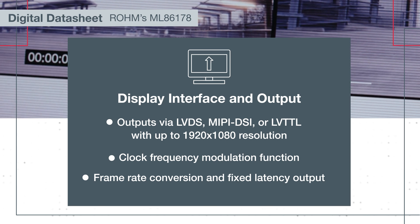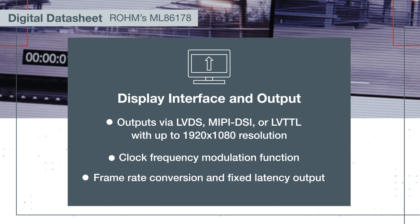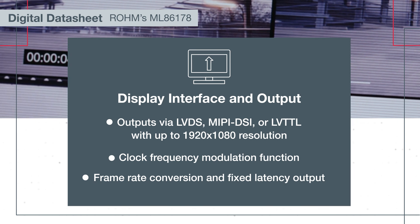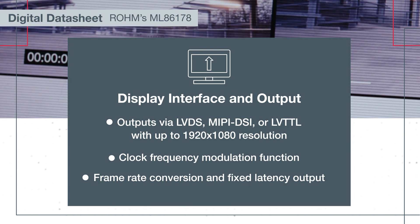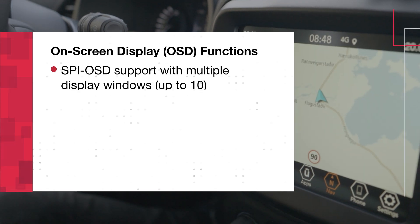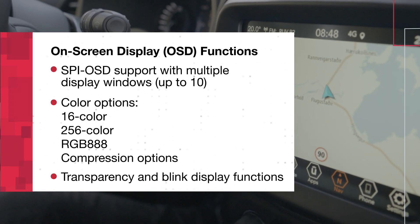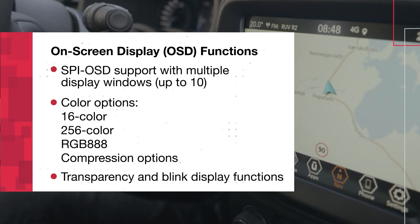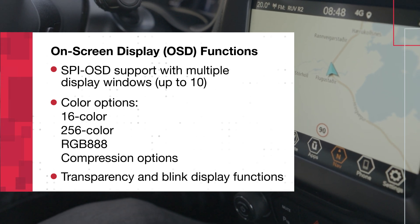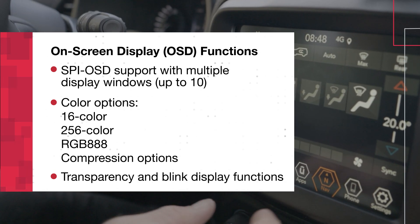The device integrates a clock frequency modulation function to reduce EMI and supports frame rate conversion for stable, synchronized visuals. The ML86178's OSD capabilities allow for up to 10 overlay windows with options for 16 or 256 colors, RGB888, and compression.